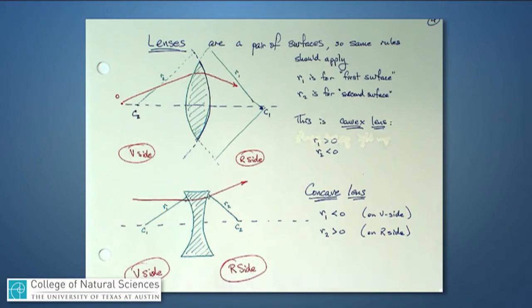Notice, however, that for a concave lens, R1 is the radius of curvature connected with the first surface that the light goes through. C1, as a result, is over on the V side, and it's the location from which you would sweep out a bunch of radii and map out the first surface.